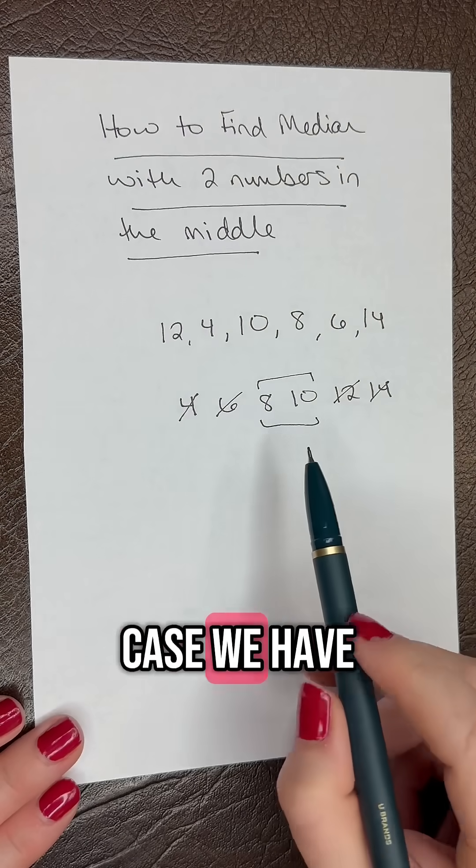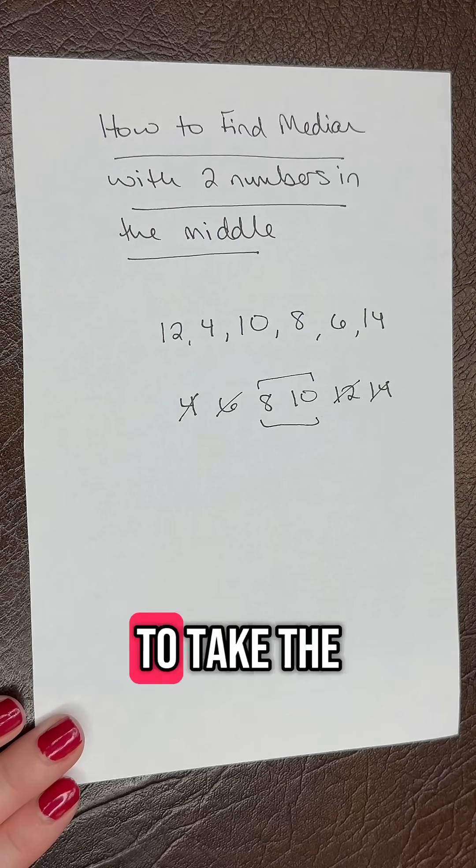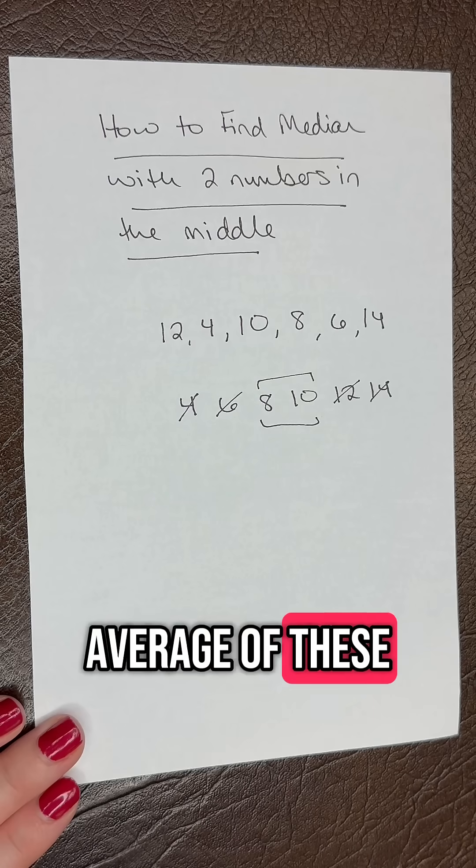So in this case, we have two numbers in the middle of the distribution. So we need to do an extra step and we need to take the average of these two numbers.